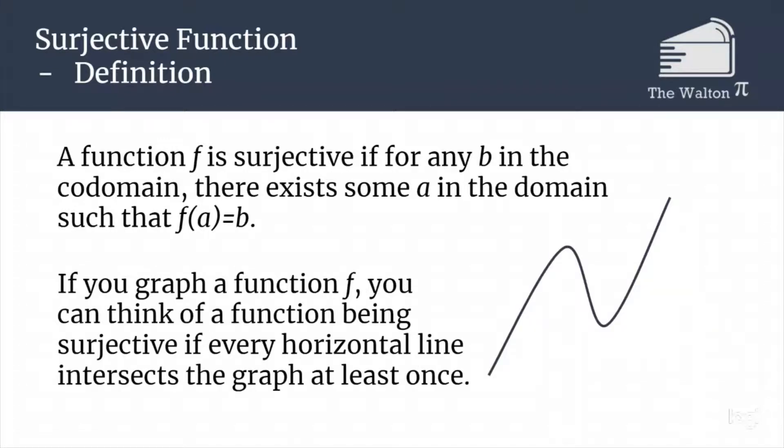We can think of this as being no matter what horizontal line you put down, it will intersect the graph at least one time. So here, no matter where we stick our line, it is going to intersect the graph at least once. And so that means that this is going to be a surjective function. Because for any possible output, there is always an input that will give us that value.